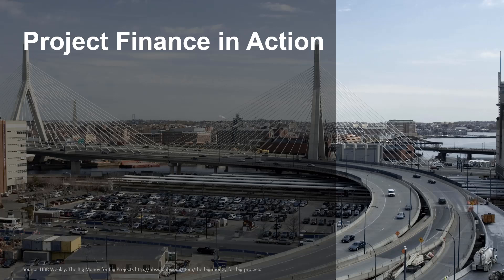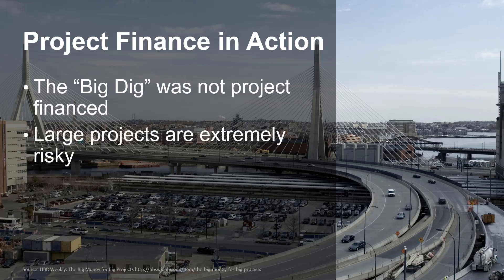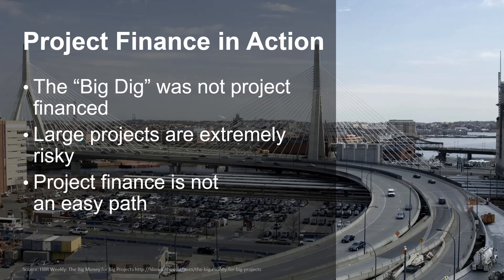Looking on Wikipedia, topping the list for most expensive public works project at $14.6 billion is Boston's Big Dig, whose official name is the Central Artery Tunnel Project. The project was municipally financed and not project financed. An important point to note is that these large projects, whether project financed or not, do carry huge risks. Many large projects — Euro Disney, for example — have had their share of financial woes. Project delays are quite common. Project finance is not an easy path; specifically, project finance projects have very large transaction costs, they take a long time to negotiate and close, and as you can imagine, the contracts and organizational structures that enable these projects can be extremely complex.